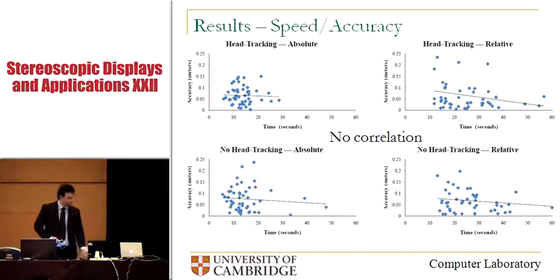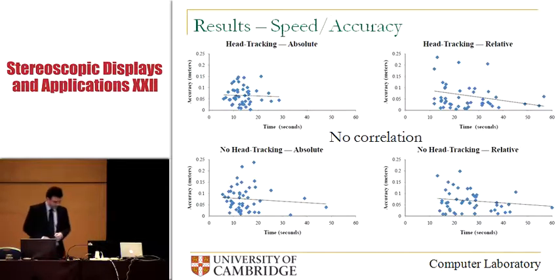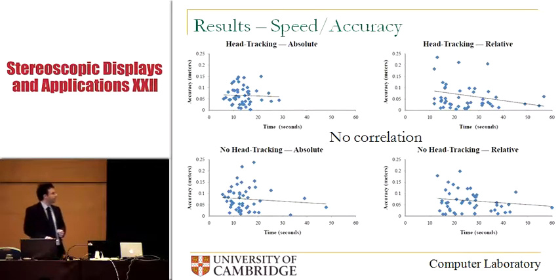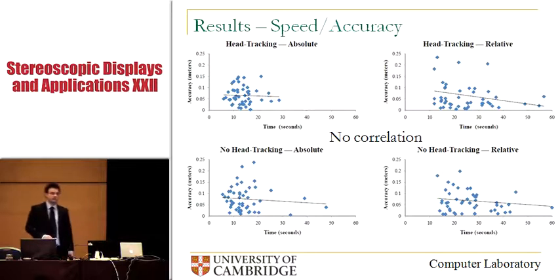This plot illustrates the lack of correlation between speed and accuracy measurements across all users for all four configurations. On the x-axis we have time for completion, and on the y-axis we have accuracy. We can see a lack of correlation by looking at the trend lines, which are roughly horizontal. There is a small trend towards better accuracy as speed decreases in the relative mode, but this is not significant. Also, relative interaction has a more dispersed sample of speed measurements, whereas absolute interaction's samples are highly clustered between 10 and 20 seconds.